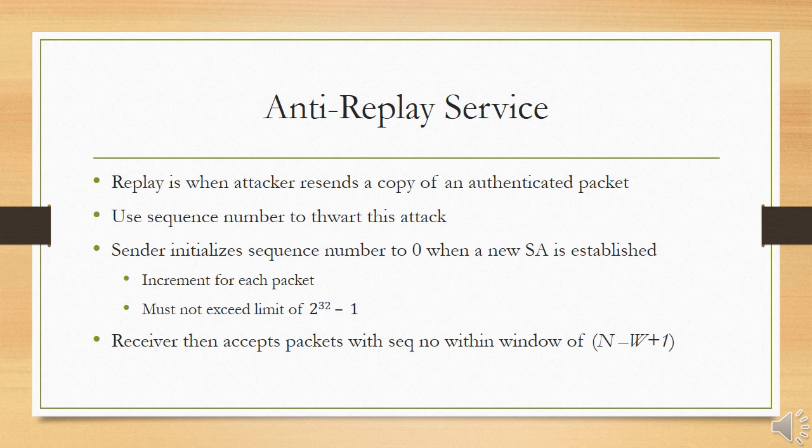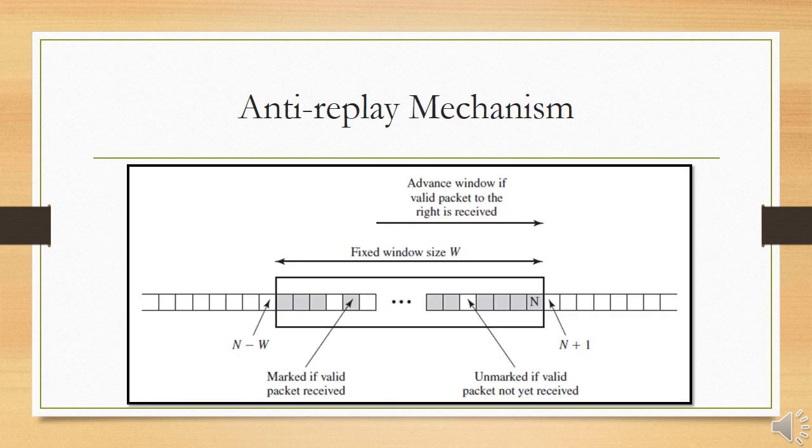Because IP is a connectionless, unreliable service, the protocol does not guarantee packets will be delivered in order or that all packets will be delivered. Therefore, the IPsec authentication document dictates that the receiver should implement a window of size W, with the default value of W equal to 64. The right edge of the window represents the highest sequence number N so far received for a valid packet. For any packet with a sequence number in the range from N − W + 1 to N that has been correctly received and properly authenticated, the corresponding slot in the window is marked.